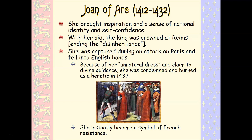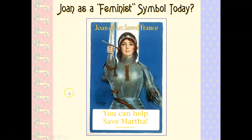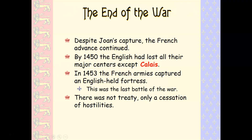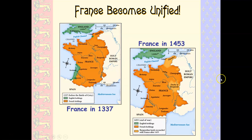Joan instantly becomes a martyr, and she becomes a symbol for the French army as they rally to eventually push the British out of France. Joan of Arc is still used as a major symbol even today. Despite her capture, the French advance continues, and by 1450 the English had pretty much lost everything. By 1453 the war is essentially over, but you've had almost a hundred years of warfare that spanned the Black Death, leaving France and England not really on the cutting edge of things.